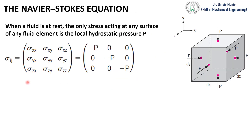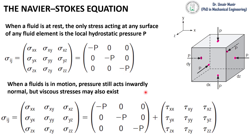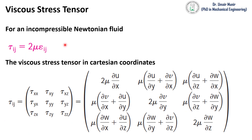Consider a fluid which is at rest. The only force acting on the fluid is the pressure force, so the stress tensor can be written in the form of pressure in this way. When the fluid is in motion, the stress tensor can be written in the form of pressure and shear viscous stresses. The viscous stress tensor for an incompressible Newtonian fluid is tau_ij equal to 2 mu epsilon_ij, which shows that the viscous shear stress is directly proportional to shear strain rate.